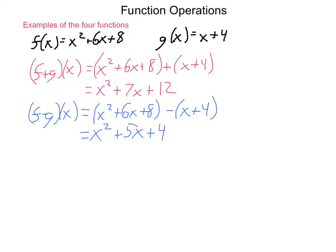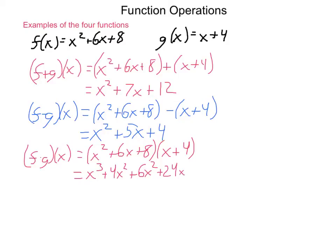Next, we're going to do f times g of x. We're going to take our f of x equation, x squared plus 6x plus 8, and multiply that by our g of x, which is x plus 4. This is just long distribution. We're going to multiply every element of our first expression, f of x, with every element of our second expression, g of x. So we get x squared times x, which is x cubed. x squared times 4, which is 4x squared. 6x times x, which is 6x squared. 6x times 4, which is 24x. 8 times x, which is just 8x. And then 8 times 4, which is 32.